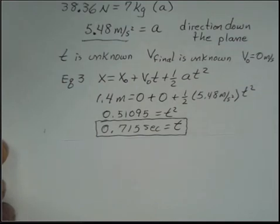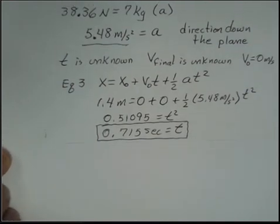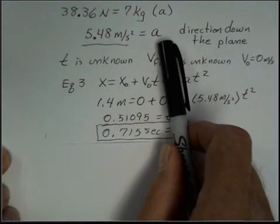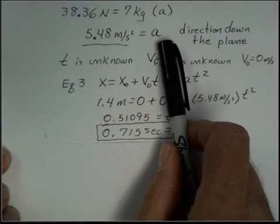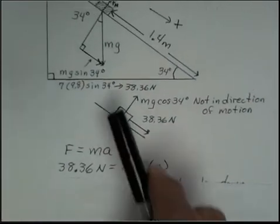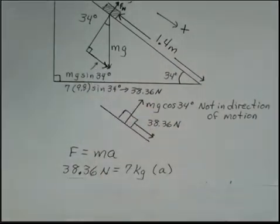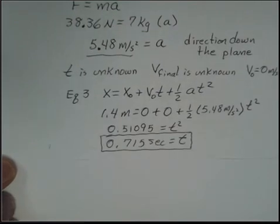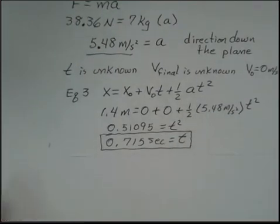0.715 seconds is our value for t. And perhaps I should make a comment back here with the acceleration. Do you think this number is reasonable? Well, I can judge that it's somewhat reasonable. It's less than 9.8 meters per second squared. We're not falling in free fall towards the surface of the earth. We're going down a ramp, and we don't have the full weight causing acceleration. We have a component of the weight. So yes, it's a reasonable number, 5.48 meters per second squared. It's less than 9.8, and we use that acceleration in the kinematic equation to come up with our time, about 0.715 seconds. Ask your instructor if you have questions on this.